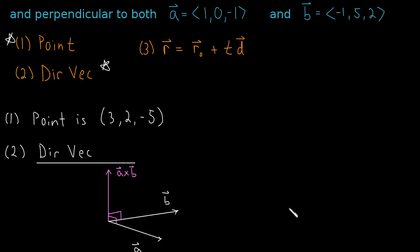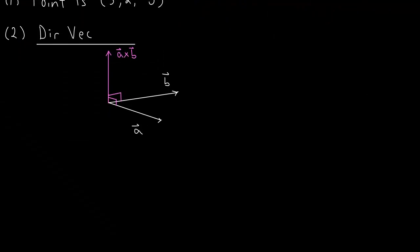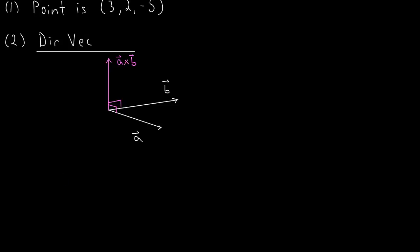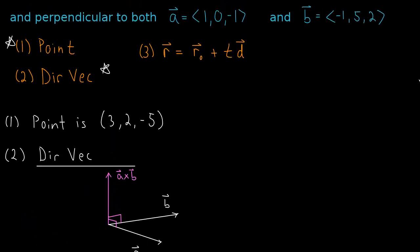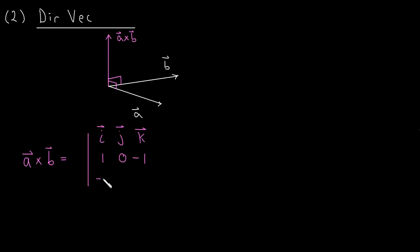So how do we do that? We have to do the cross product of A cross B. So let's go ahead and set that up. This is still part of finding a direction vector. And how do we do this? We do this determinant, I, J, K, and A was 1, 0, -1. Let me go back up and check what these vectors were. 1, 0, -1, and B is -1, 5, 2.